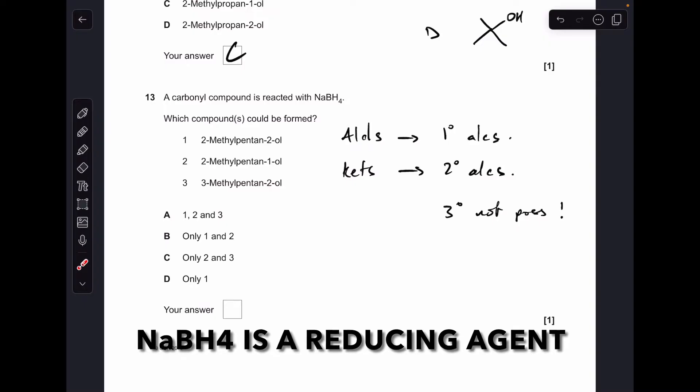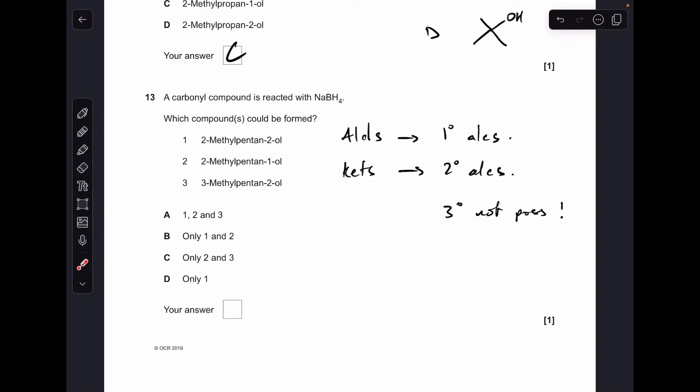Question thirteen, just a reminder: aldehydes are reduced to primary alcohols, ketones reduced to secondary alcohols, tertiary alcohols aren't possible. I've just drawn out the skeletal formula for the three alcohols. Number one, two methyl a pen to all, you can see that that is actually a tertiary alcohol because you've got one, two, three carbon groups bonded to the OH carbon, so that's not right. Option two, that's a primary alcohol, so that's possible. Option three is a secondary alcohol, so that's okay as well. Two and three correct, C.